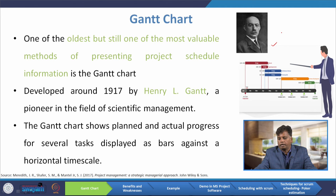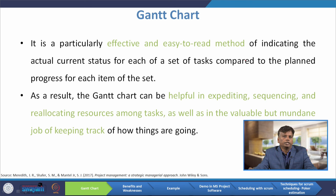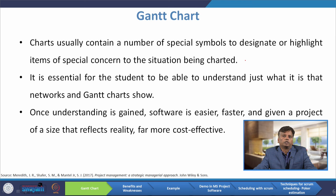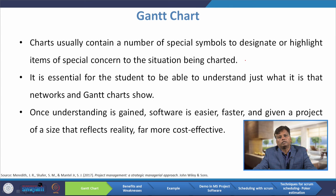The Gantt chart is a particularly effective and easy-to-read method for indicating the actual current status of each task in a set compared to planned progress. It can be helpful in expediting, sequencing, and reallocating resources among tasks, as well as keeping track of how things are going. Charts usually contain special symbols to highlight items of special concern. Once understanding is gained, software makes it easier, faster, and far more cost-effective.